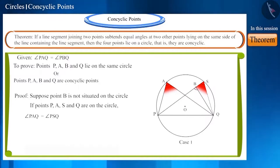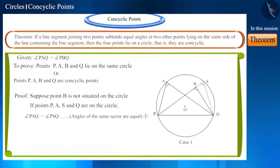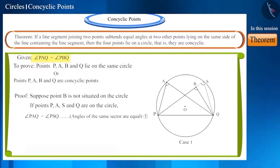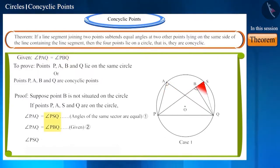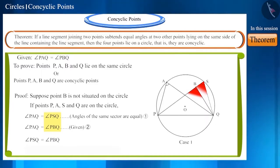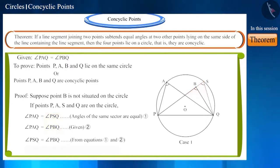But we are given that angle PAQ and angle PBQ are equal. This means angles PSQ and PBQ will also be equal. However, points S and B are located on the same line segment PB.